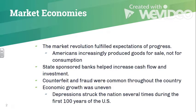Within states, we have state banks really sponsoring the construction of roads, canals, and railroads. There are a lot more of those investments being done in the north than in the south, and that'll play a big part later — especially in the Civil War — where the north is really able to out-transport and out-produce the south. There's also a lot of counterfeit currency because there wasn't one standard form of currency, causing issues with fraud.